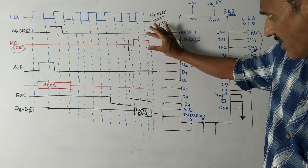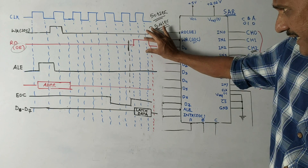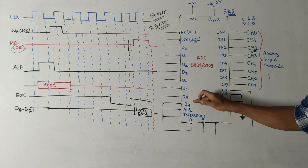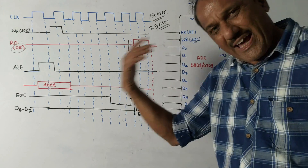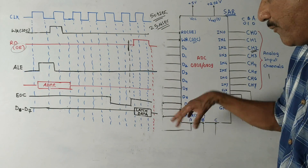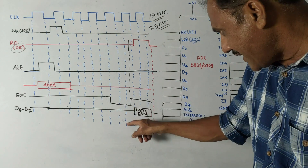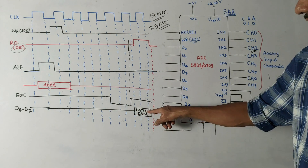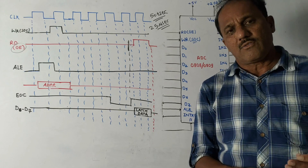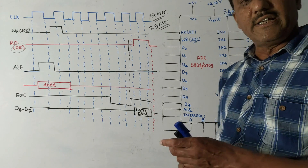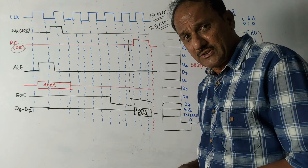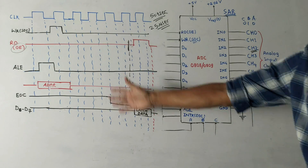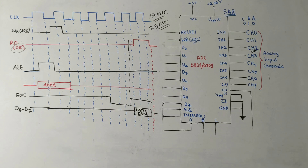Once the Output Enable pin is activated, the data available from D0 to D7 will be actually available to the 8051 for a particular operation. This is represented by the D0 to D7 waveform showing the output data. So if the exam question asks you to draw the interfacing diagram and explain it with waveforms, you need to explain all these waveforms.